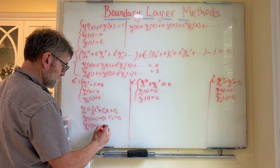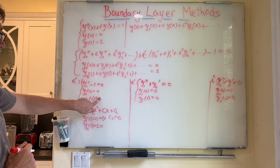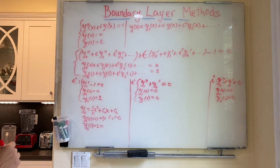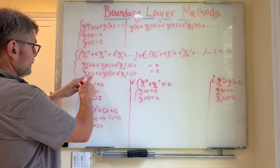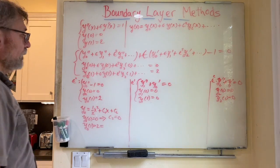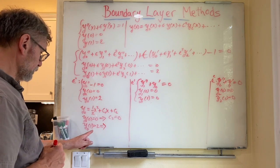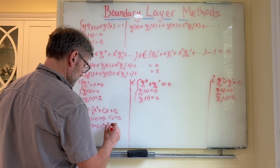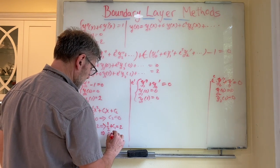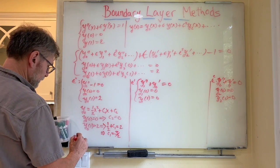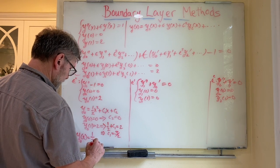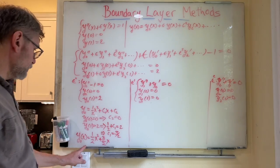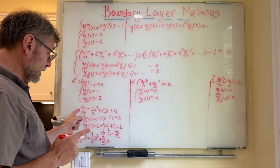Whereas y naught of one equals two — and that should indeed be two because this term doesn't involve a power of epsilon. So one half plus c1 equals two, which means c1 equals three halves. Therefore my first function y naught of x equals one half x squared plus three halves x. We have a solution that satisfies the equation to order epsilon to the power zero and the boundary conditions.